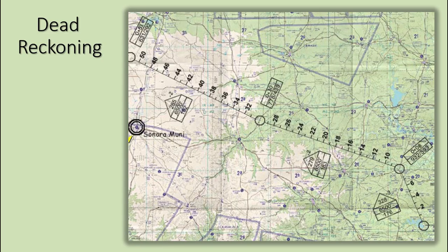Dead reckoning is navigation solely by means of computations based on time, airspeed, distance, and direction. The products derived from these variables, when adjusted by wind speed and velocity, are heading and ground speed. The predicted heading takes the aircraft along the intended path and the ground speed establishes the time to arrive at each checkpoint and the destination. You will utilize dead reckoning on your low-level flights in pilot training.